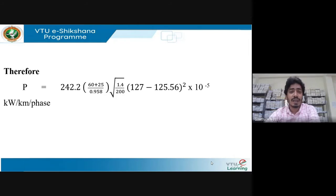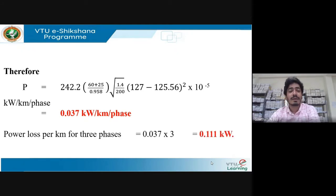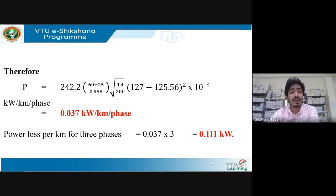With all unknowns found, substitute all values into the corona power loss expression. The result is 0.037 kW per kilometer per phase. Since it's a three-phase system, multiply by 3, giving 0.11 kW per kilometer for the three-phase line.